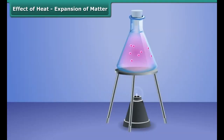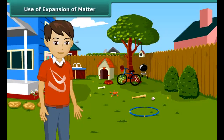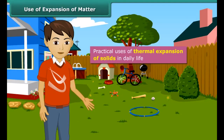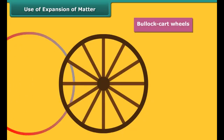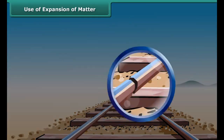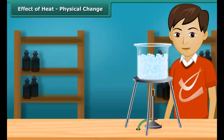Liquids and gases are fluids. They expand on heating. Expansion in gas is very large compared to solids or liquids. Some practical uses of thermal expansion of solids in daily life: the iron rim is fitted on wooden wheels by heating. When the metal cools, it holds the segments of the wooden wheel firmly. A small gap is left between the rails of a railway track where two rails are joined with the help of a fish plate. The gap is left to allow space for the expansion of rails in summer.